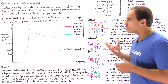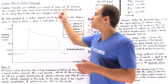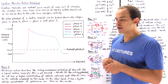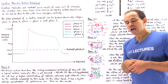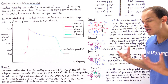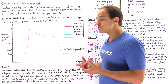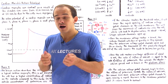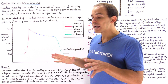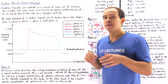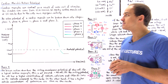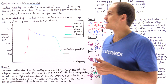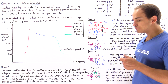The third reason is something called myogenic activity. Certain cardiac myocytes can actually generate their own action potential — they can contract by themselves without any type of outside stimulus. This is known as myogenic activity.